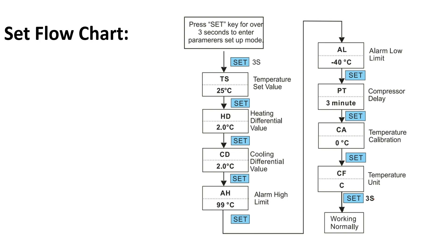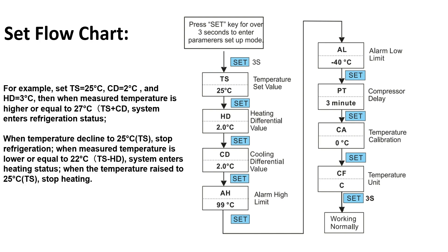Here we can see the significance of the HD and CD values. Suppose the user sets the temperature set value to 25°C, CD to 2°C, and HD to 3°C. When the measured temperature is higher than or equal to 27°C (which is the set temperature plus the cooling differential CD), the controller enters refrigeration mode. When the temperature declines back to 25°C, the controller stops refrigeration.